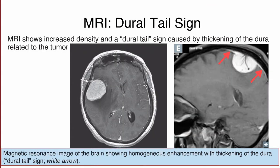On MRI, we can see the dural tail sign. The dural tail sign is basically the homogeneous enhancement of the tumor cells along with thickening of the dura mater. Here again we can appreciate the dural tail sign on MRI.